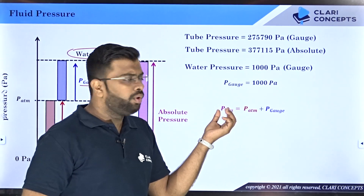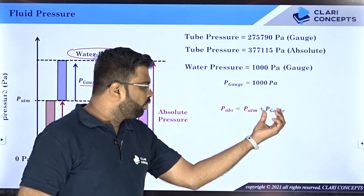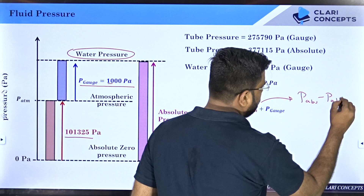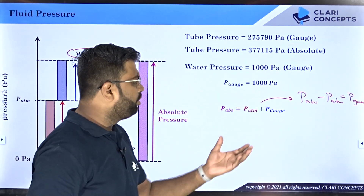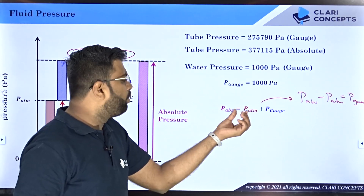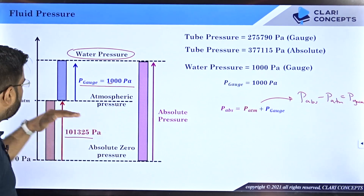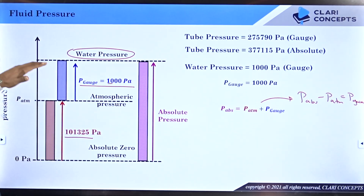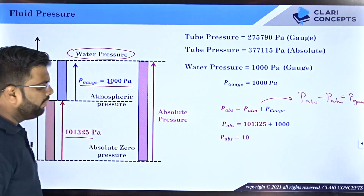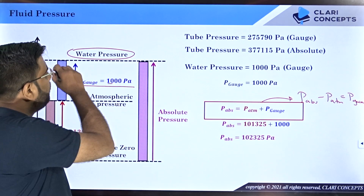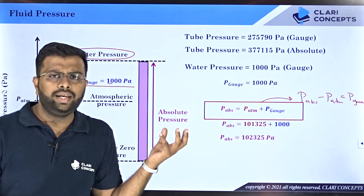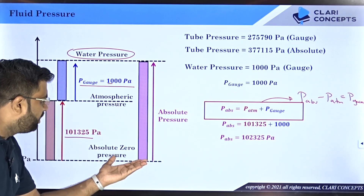If you have gauge pressure and want absolute pressure, you add the atmospheric value. Just remember this graph — whenever there is a gauge, plot the atmospheric line and mark that value above atmospheric. Then if you want to measure from absolute 0, take the addition of both numbers. So I get 102325 Pascal absolute for the same water pipe. The pressure is the same — there is no difference — but the way it has been represented has different meaning. In one case it is from absolute zero, in another from the atmospheric pressure line.